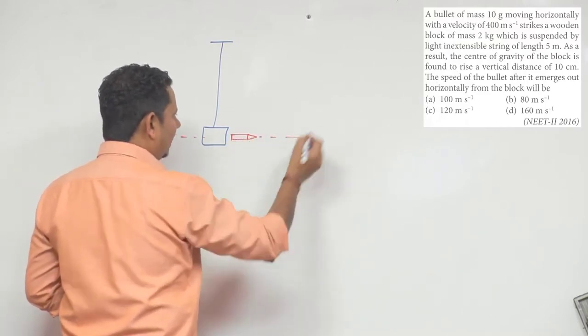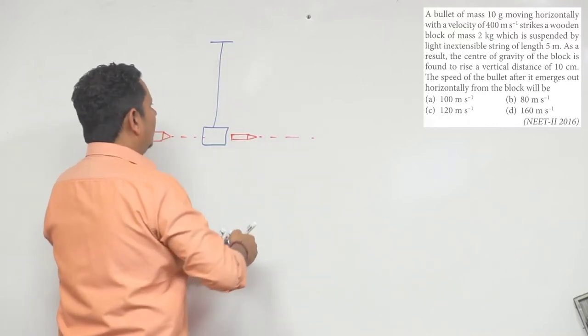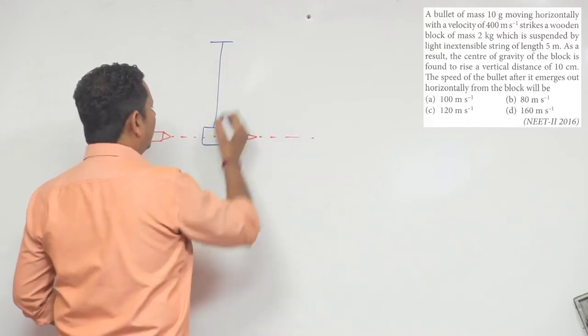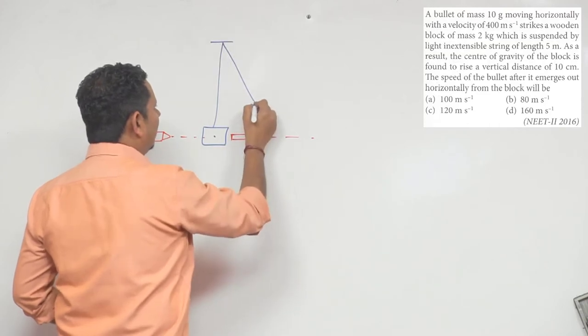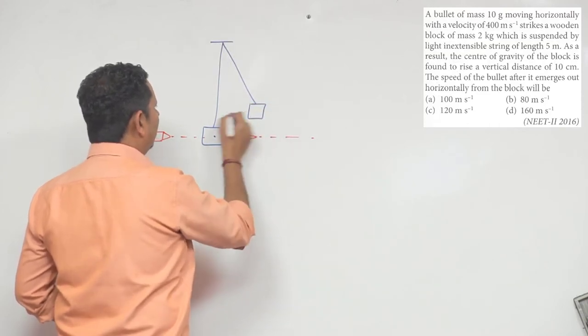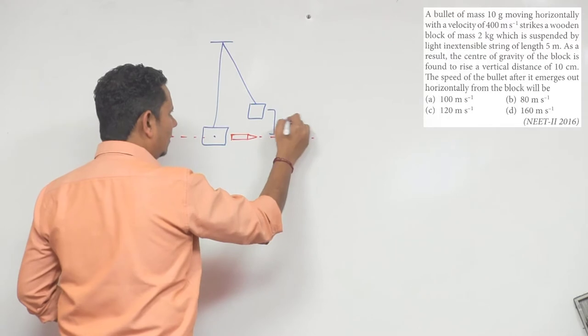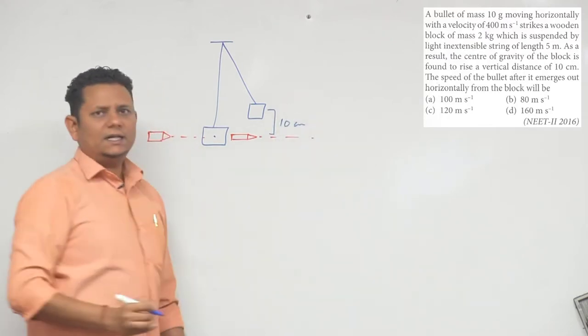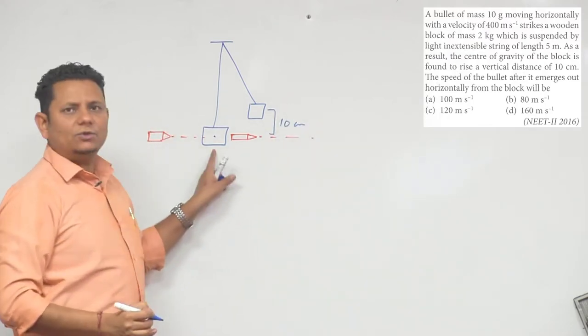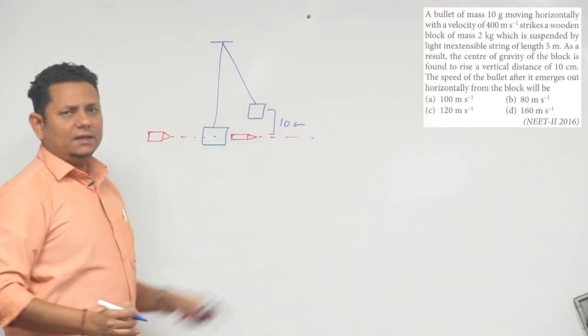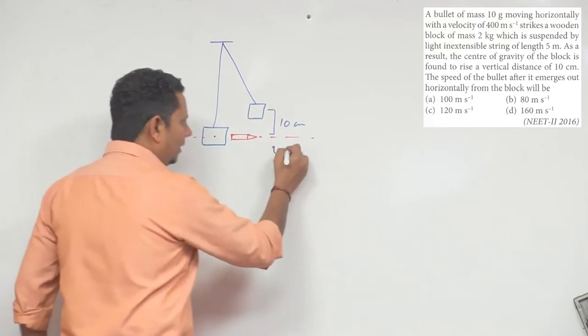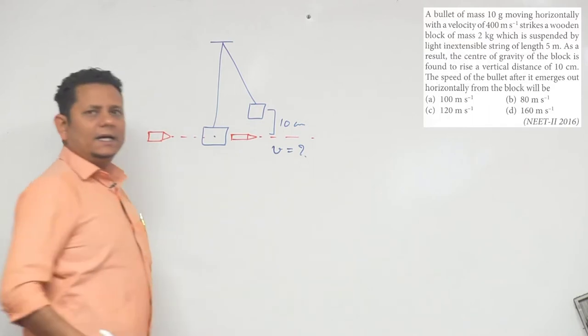After the bullet hits the block, the bullet emerges out from the other side. The block's center of mass rises 10 cm higher because of the energy transferred to it. We need to find the velocity of the bullet as it exits.